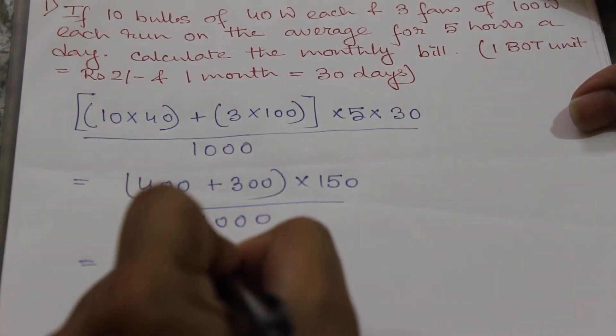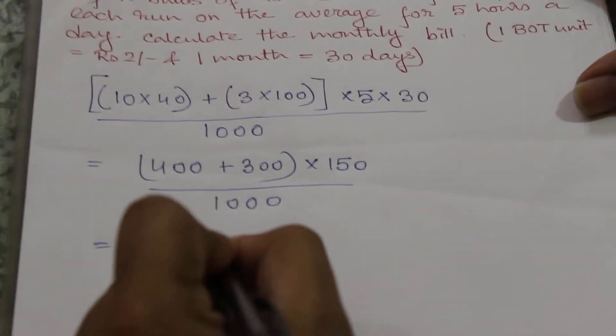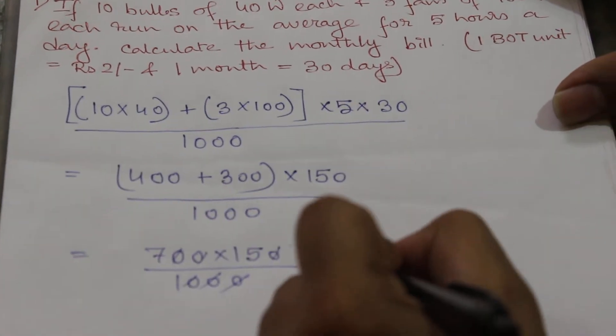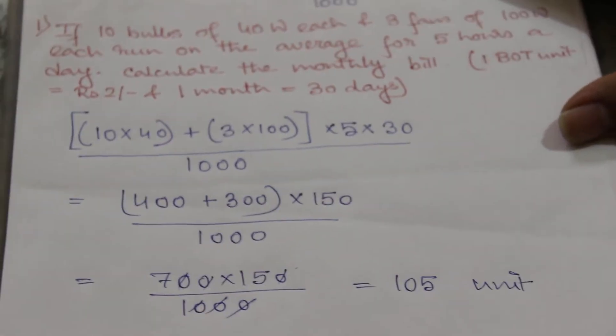So 700 into 150 by 1000. So this will be equal to 105 unit or 105 BOT unit.